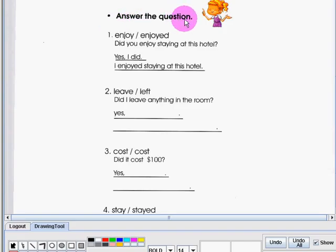In this activity, you need to answer the question. Number one is a bonus. So you need to use the word enjoy, enjoyed. And here's the sample question: Did you enjoy staying at this hotel? The correct answer is yes, I did. I enjoyed staying at this hotel.